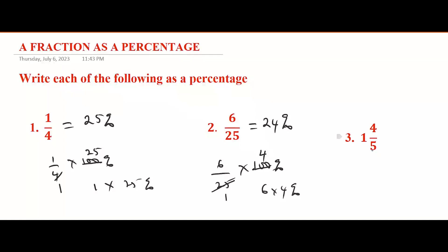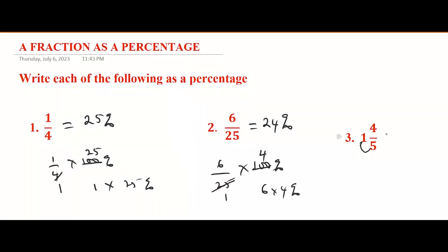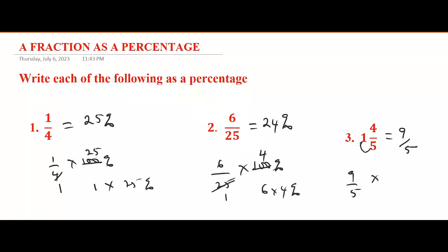For the third one we have a mixed number, so the first thing to do is write it as an improper fraction. Multiply five by one — that is five — then add four, giving nine. So the mixed number 1 and 4/5 is the same as 9/5. You can now say 9/5 multiplied by 100%.